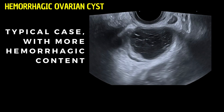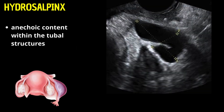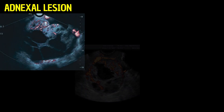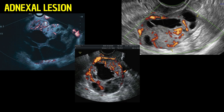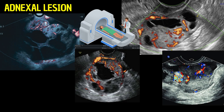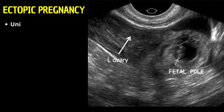Should the ultrasound reveal anechoic content within the tubal structures, we might lean towards a diagnosis of an uncomplicated hydrosalpinx, devoid of infectious complications. The presence of solid, vascularized portions within the cystic formations would necessitate further diagnostic exploration, possibly with MRI, to rule out neoplastic processes.